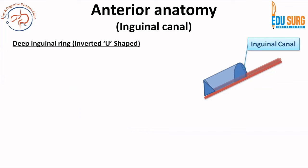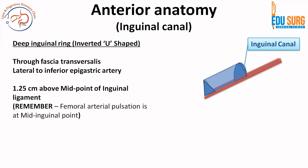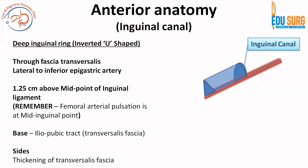The deep inguinal ring is an inverted U-shaped structure through fascia transversalis and it is lateral to the inferior epigastric artery. Its surface landmark is 1.25 centimeters above the midpoint of the inguinal ligament — and importantly, the mid-inguinal point is different from the midpoint of the inguinal ligament. The base of the deep inguinal ring is formed by the iliopubic tract, which is the posterior reflection of the inguinal ligament, and the sides are thickenings of transversalis fascia.